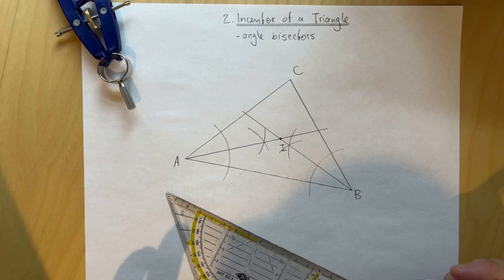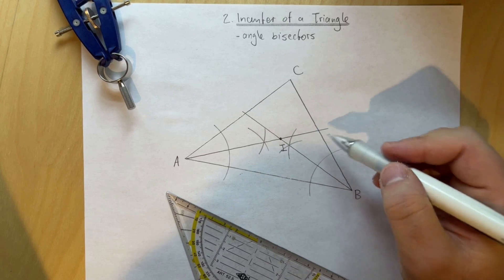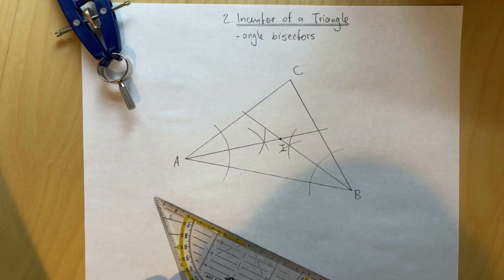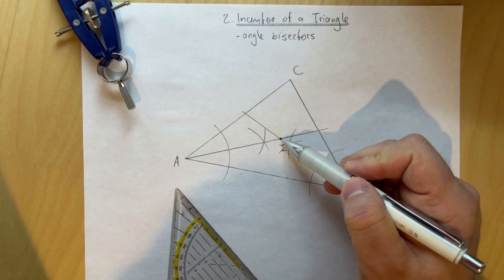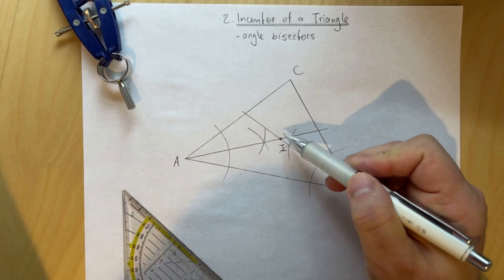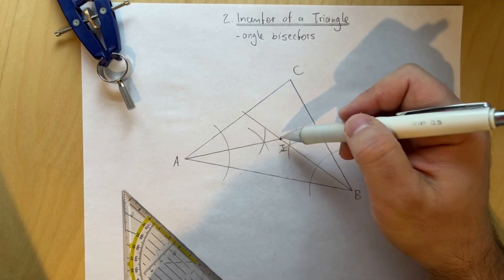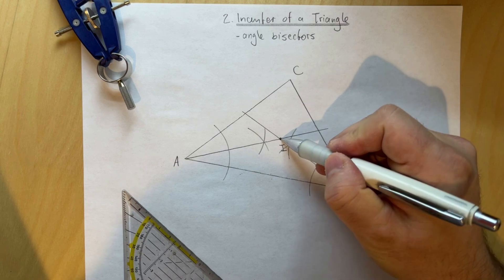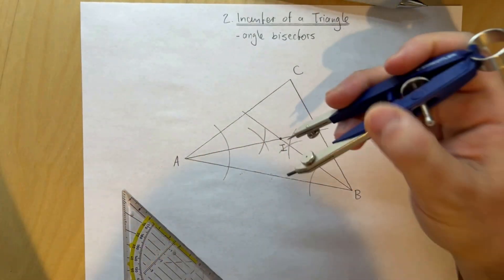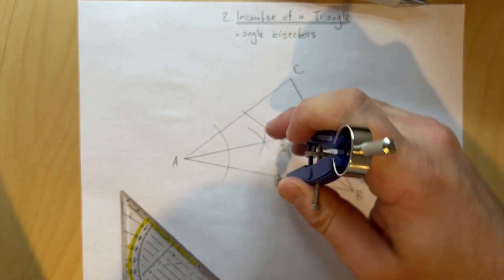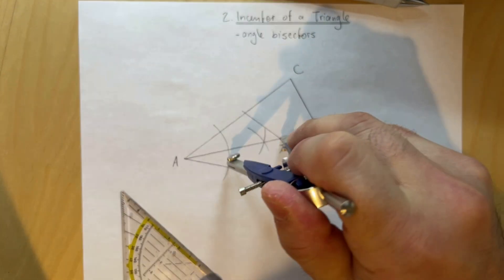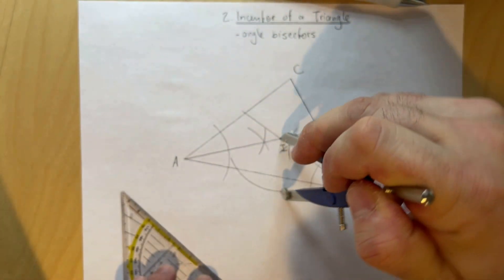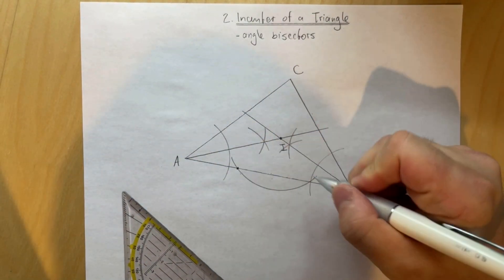To construct the incircle, it must be tangent to all three sides. A tangent is perpendicular to the radius of the circle. So we draw a radius perpendicular to one of the segments — say segment AB — passing through point I. We put the compass on I and select a width that intersects segment AB at two different points, then draw arcs from those intersection points to construct the perpendicular.